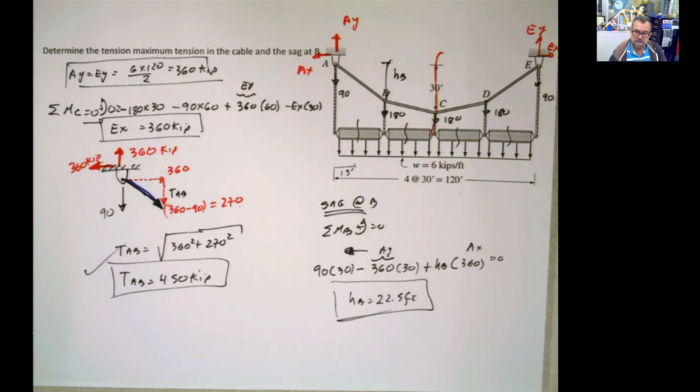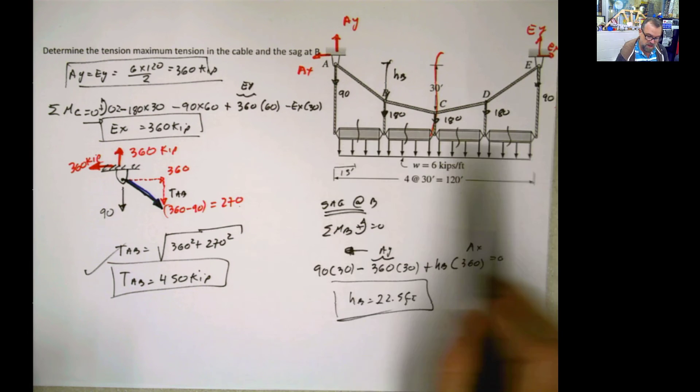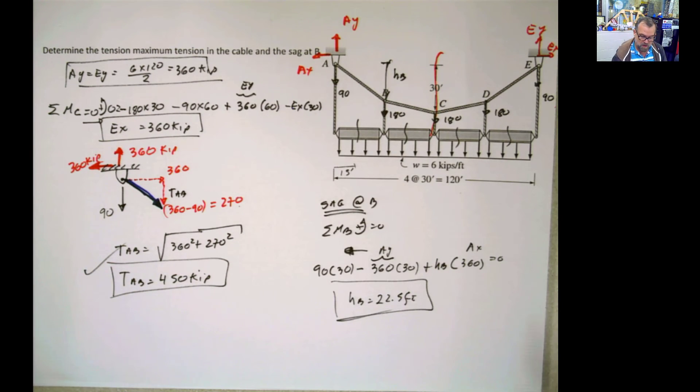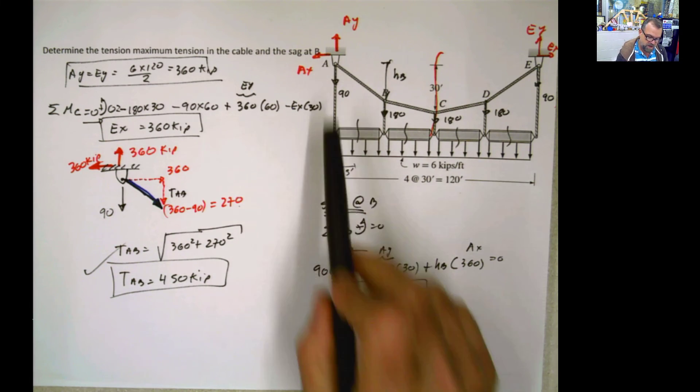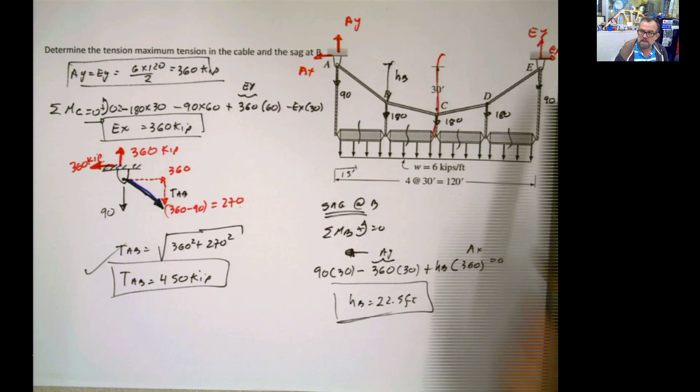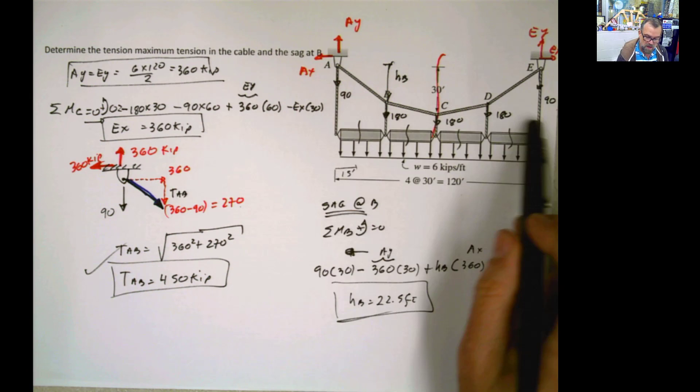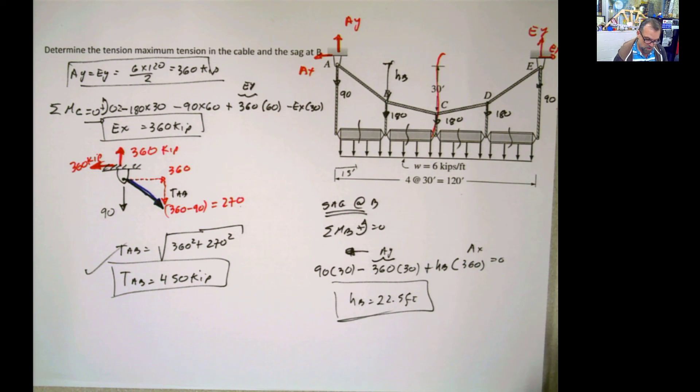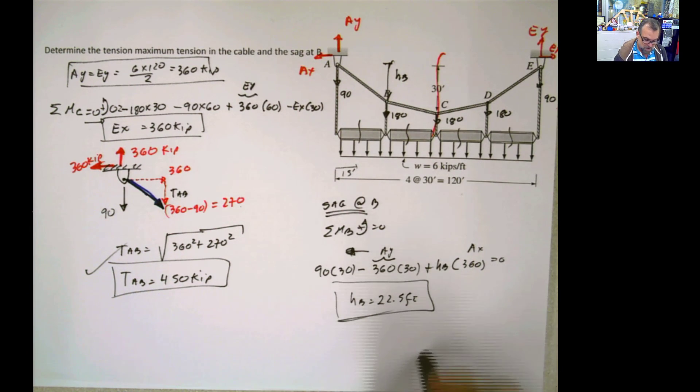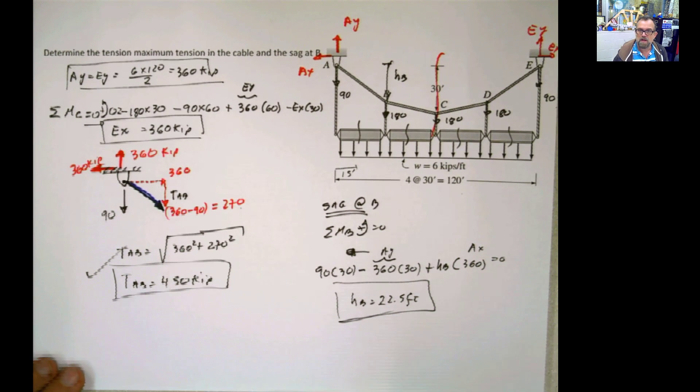Now, the other thing is if you fall into temptation and you treat this as a distributed load, that would work, maybe, if these two hangers don't exist. Then you might get a very, very close result. But with those two hangers here, that's not going to work. So check this out. Think about it. Don't memorize it.